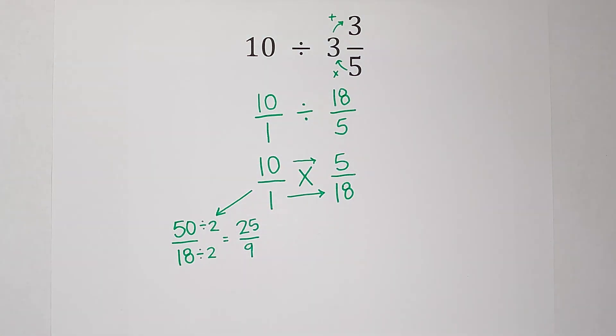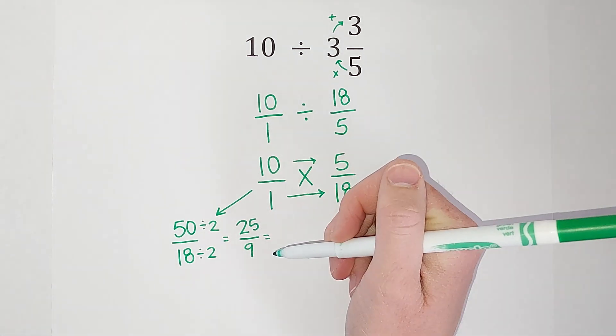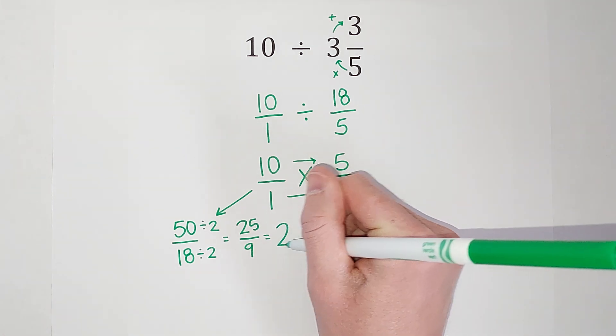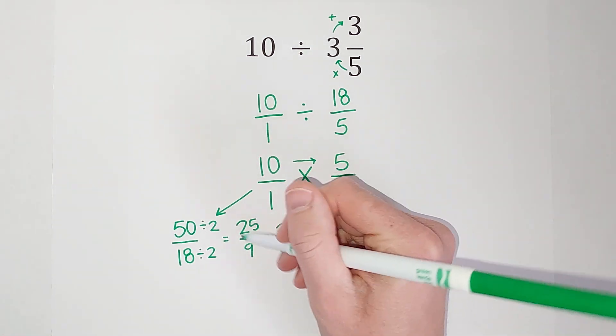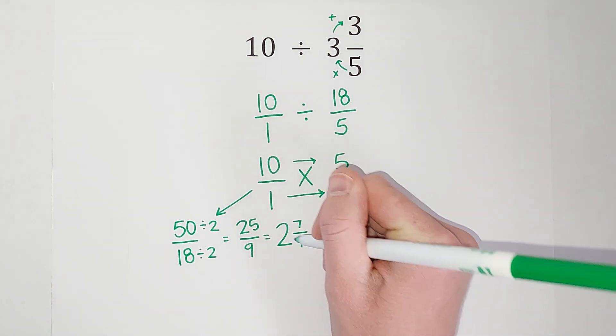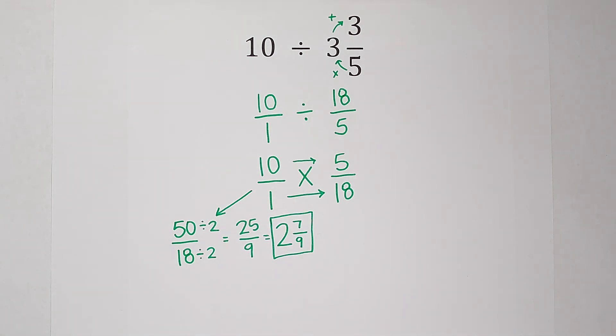And then we do like to turn it back into a mixed number. So to do that, I just ask myself, how many times does 9 go into 25? Well, it goes twice. But 9 times 2 is 18, so I have some left over. I have 7 left over, and we're still in 9ths. So that is my answer.